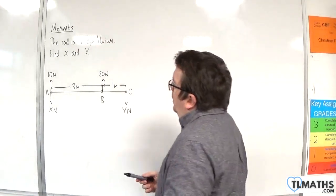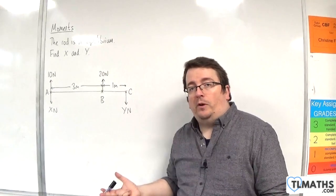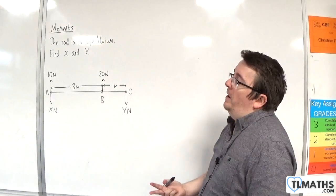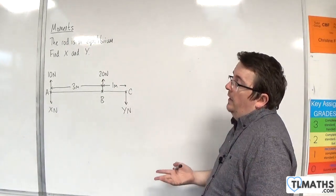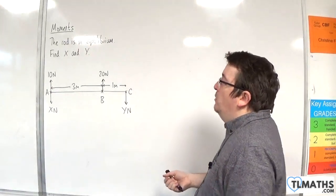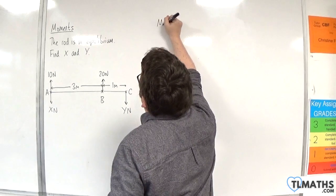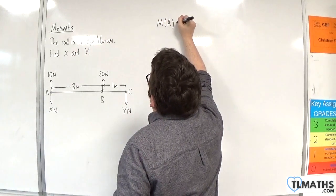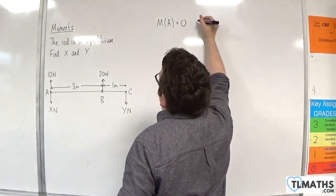We've got two options: we can either take moments about a point or we can resolve vertically. I'm going to take moments about point A. Taking moments about point A, it will equal 0 because we're in equilibrium.